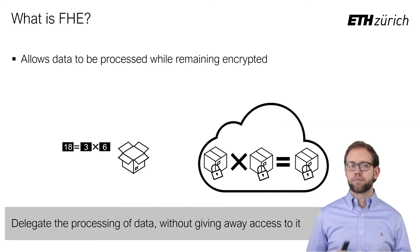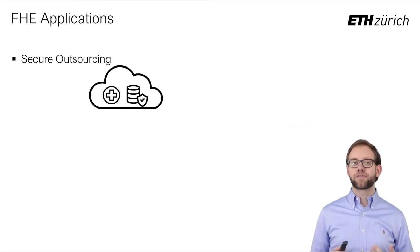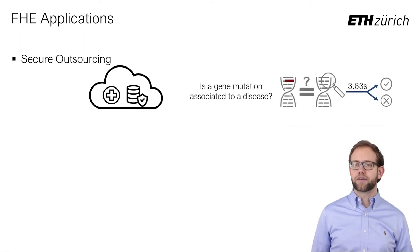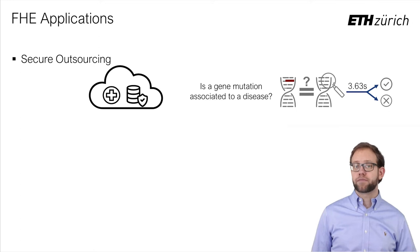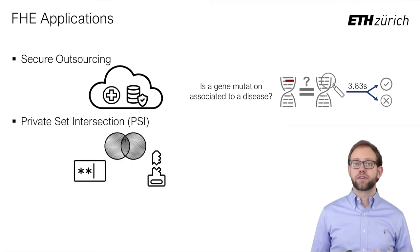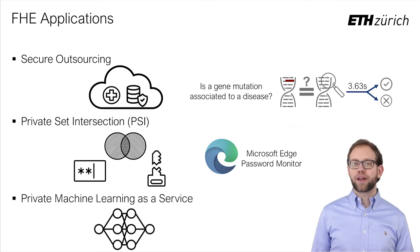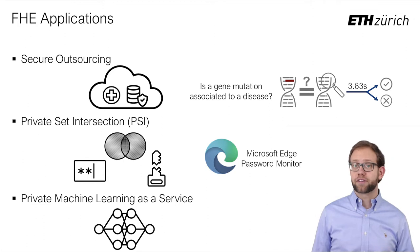Efficient FHE is a major leap towards a private digital world and enables a wide variety of applications. For example, outsourcing medical data currently requires expensive dedicated setups. Using FHE, one could use cheaper standard cloud services while still protecting sensitive and highly regulated patient data. FHE can also be used to accelerate common secure computation tasks like private set intersection, and is now being deployed in Microsoft's Edge browser. Another example is privacy-preserving machine learning as a service, where a platform can offer predictions and classifications of clients' encrypted data without having to share their proprietary model.